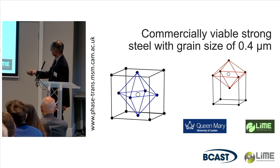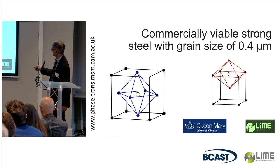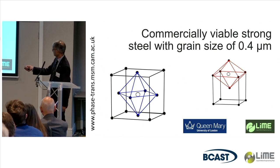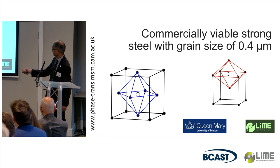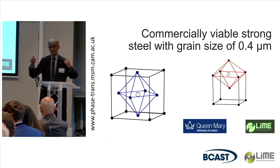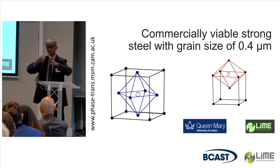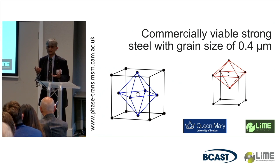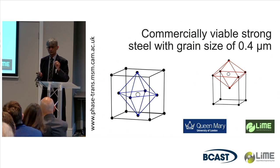This is the crystal structure of austenite — face-centred cubic. And this is the crystal structure of ferrite, which is body-centred cubic. If I put a carbon atom in the austenite, then it's in a regular octahedron. A regular octahedron means that the carbon atom causes a uniform expansion, and therefore it is very weak in strengthening the austenite. So carbon has a very small effect on the strength of austenite.